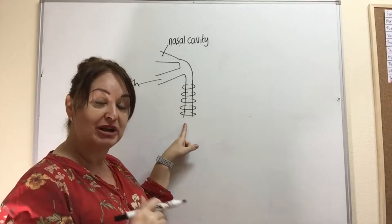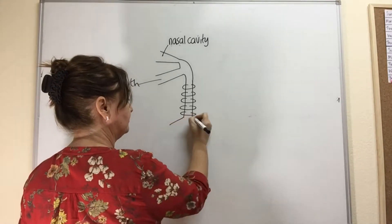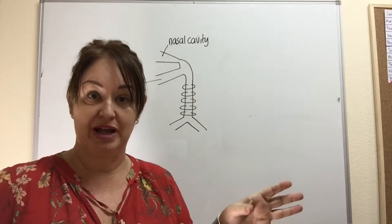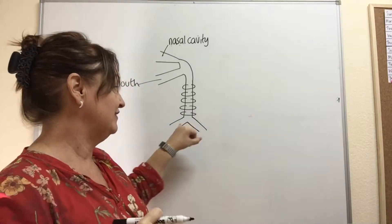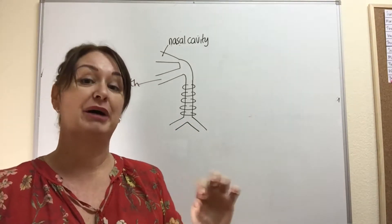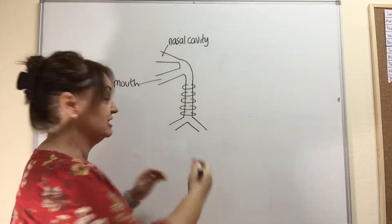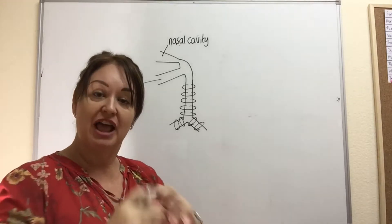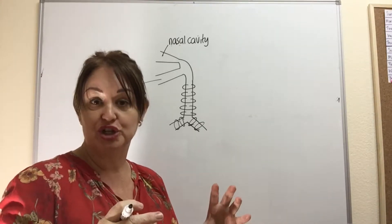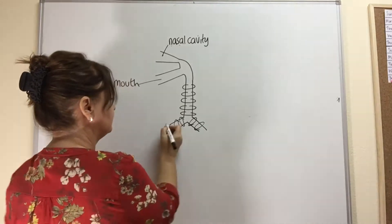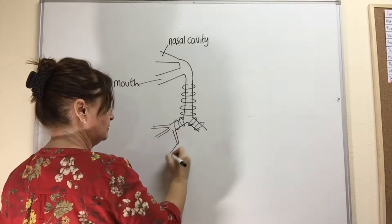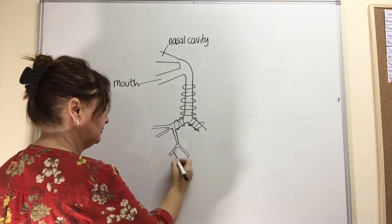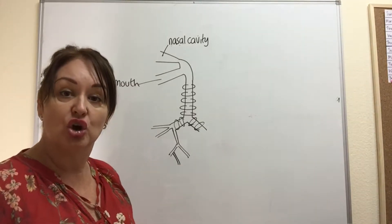The trachea then branches into two bronchi. Even in the bronchi, they are still held open by rings of cartilage — this time complete rings. Each bronchus then splits into smaller and smaller tubes called bronchioles. These get smaller and smaller, and ultimately they end in structures called alveoli.